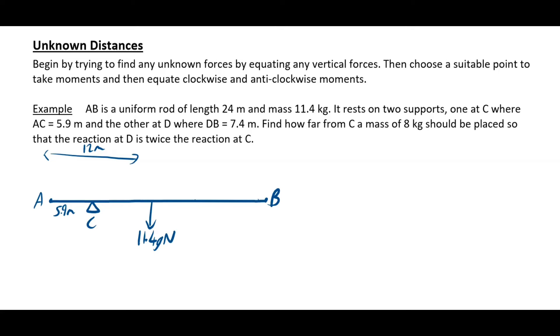If I call that reaction P going upwards, then also there is another support at D, at D where DB is 7.4. So slightly further away from your end this time. So that's 7.4 meters. That's your point D. The question says how far from C a mass of 8 kg should be placed so the reaction at D is twice the reaction at C. So the reaction at D is 2P.